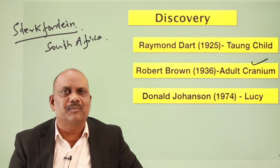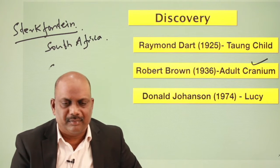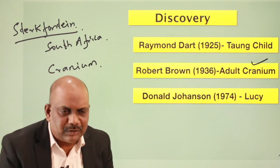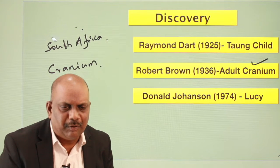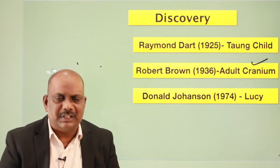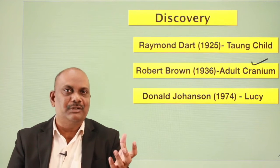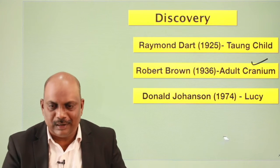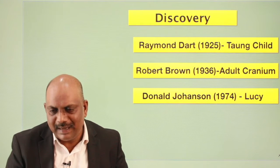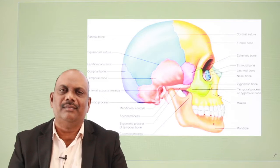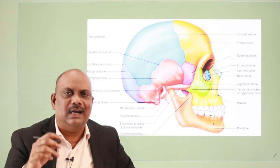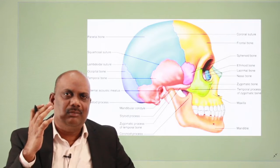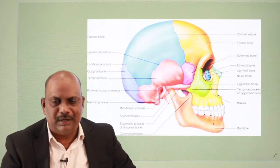What do we mean by cranium? The cranium refers to the collection of bones which surrounds or envelopes the human brain. It is not a single piece of bone — there are a number of bones that make up the cranium. The most important ones include the frontal, parietal, occipital, temporal, sphenoid, and ethmoid bones.